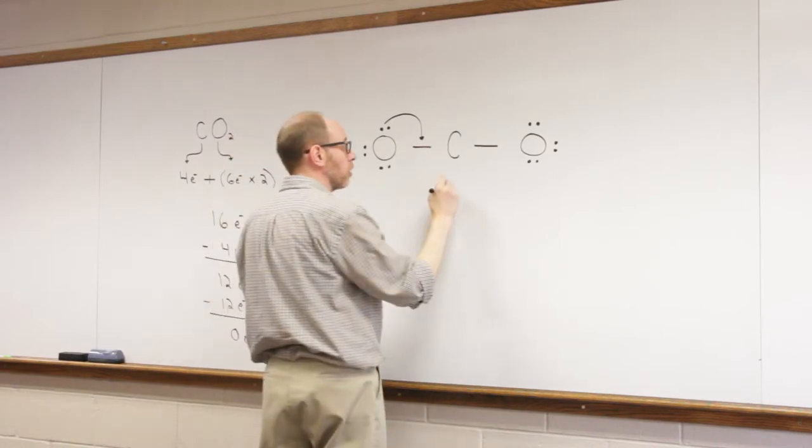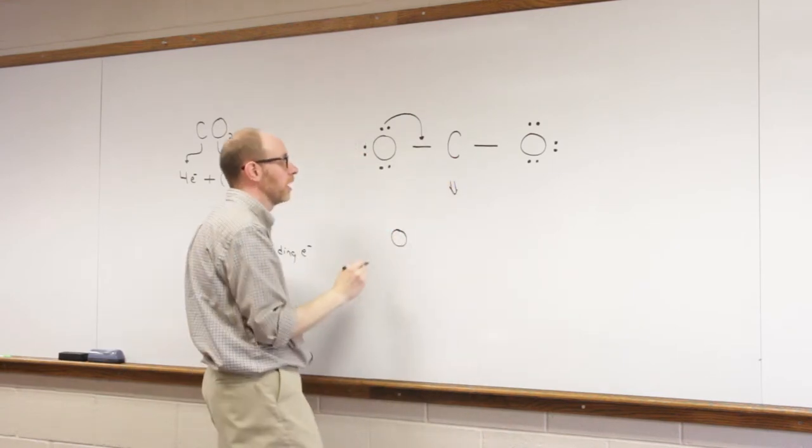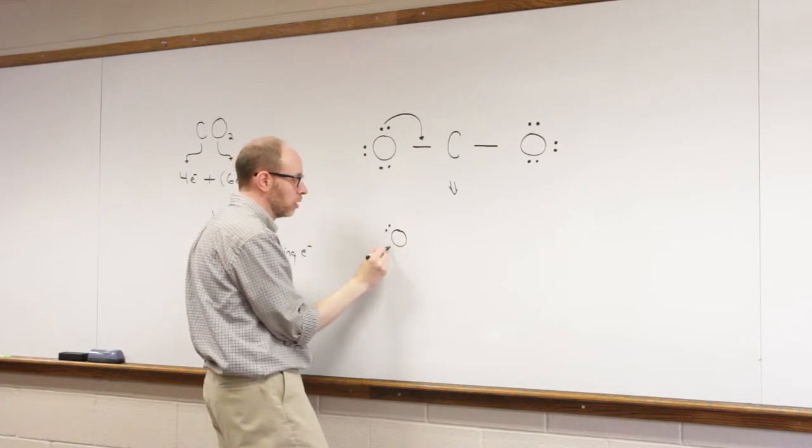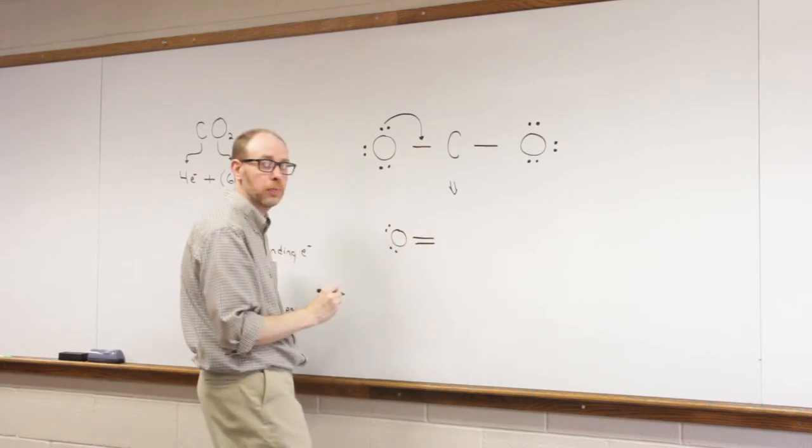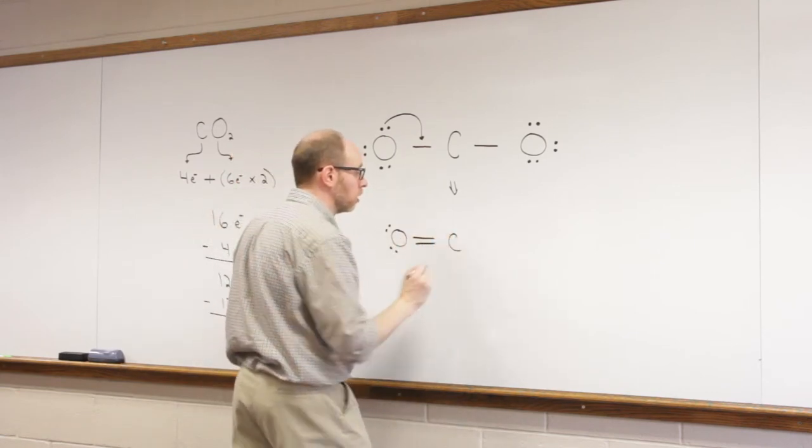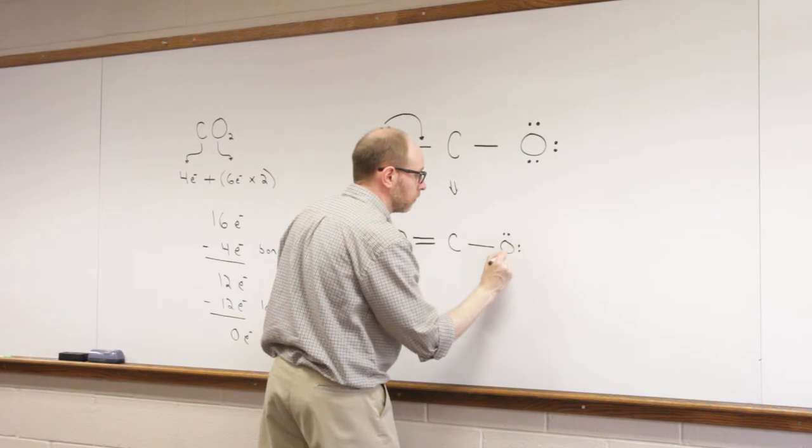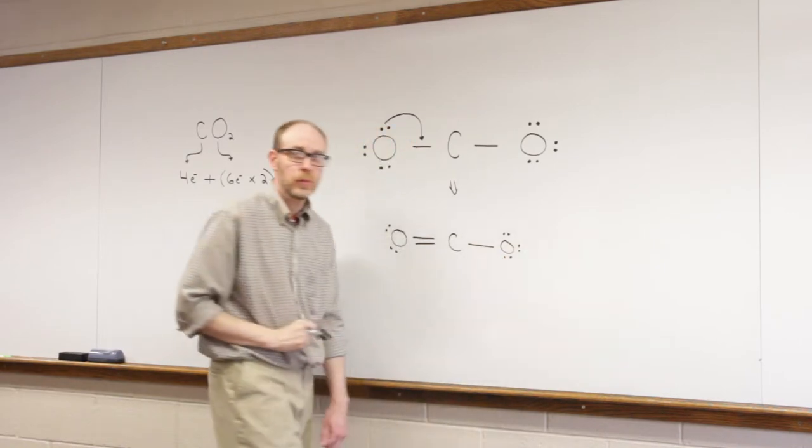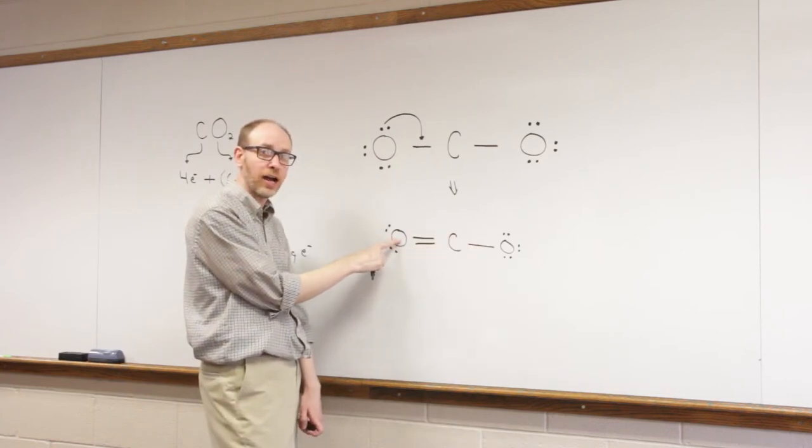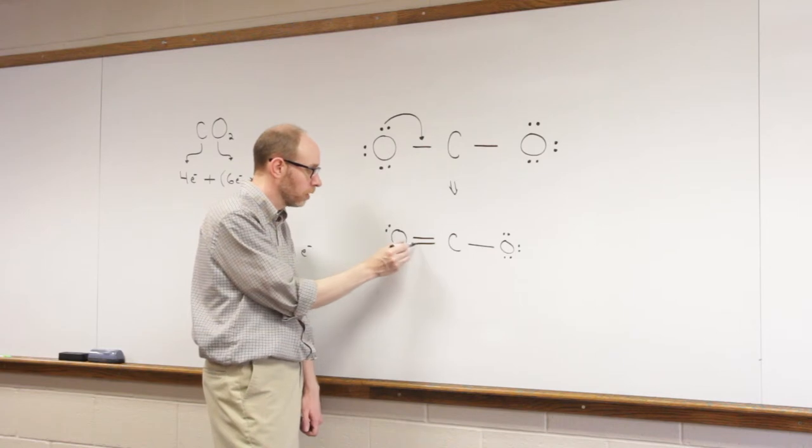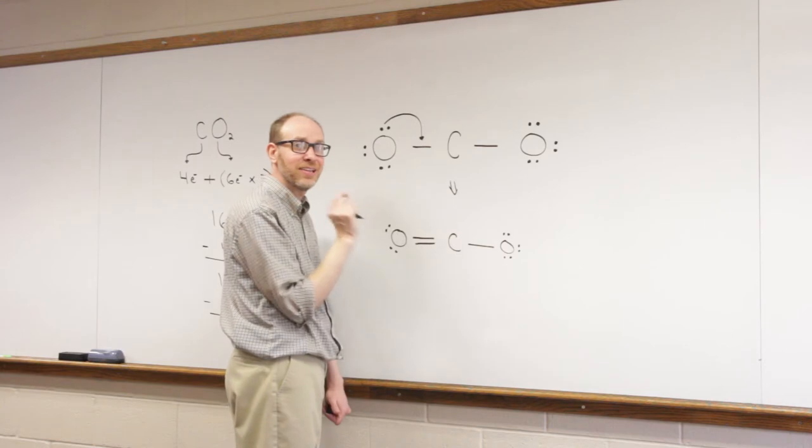So this oxygen is going to share a pair of electrons with that carbon. What does that look like in terms of structure? So now this oxygen only has 4 electrons left in lone pairs, and there are now 2 bonds between that oxygen and that carbon atom. This oxygen is still good. This oxygen that's shared has 2, 4, 6, 8 electrons around it. It's still good.